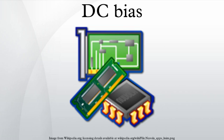DC balanced signals are used in communication systems to prevent bit errors when passing through circuits with capacitive coupling or transformers. Bit errors can occur when a series of ones create a DC level that charges the capacitor of the high-pass filter used as the AC coupler, bringing the signal input down incorrectly to a zero level. In order to avoid these kinds of bit errors, most line codes are designed to produce DC balanced waveforms. The most common classes of DC balanced line codes are constant weight codes and paired disparity codes.